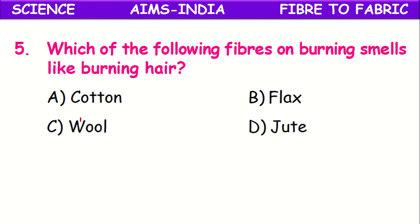Which of the following fibers on burning smells like burning hair? Out of cotton, flax, jute, and wool — wool smells like hair when burned, because wool is obtained from the hair of certain animals like camel, sheep, and yak. The fiber from these animals is used for making wool, which is why burning it gives a smell of burning hair.